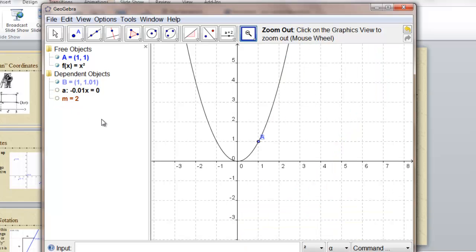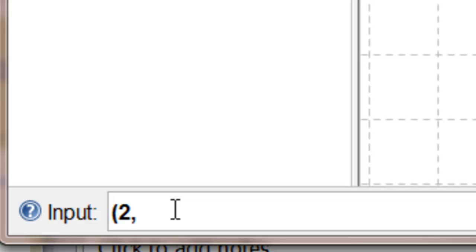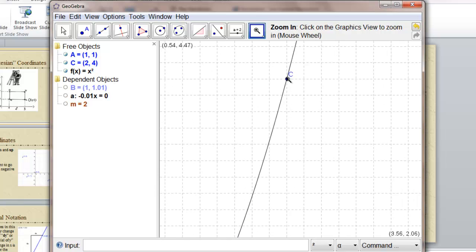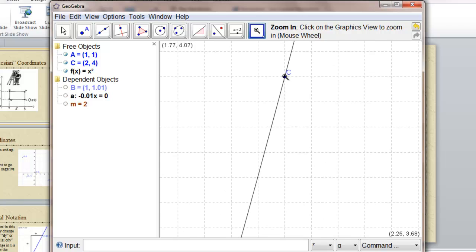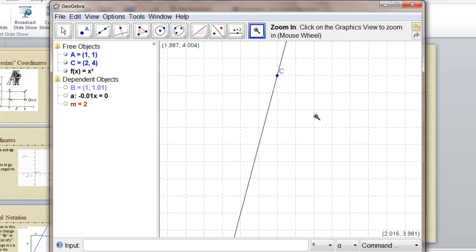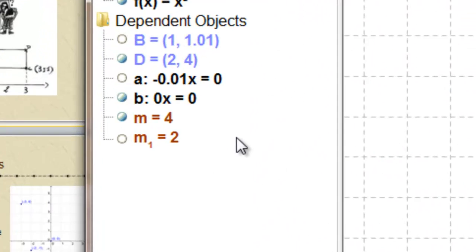Let's hide a few things and look at another point. Point (2,4). We'll zoom in. Looks like at this point the line goes up four and over one. We'll make a line again and check its slope. The slope is four.